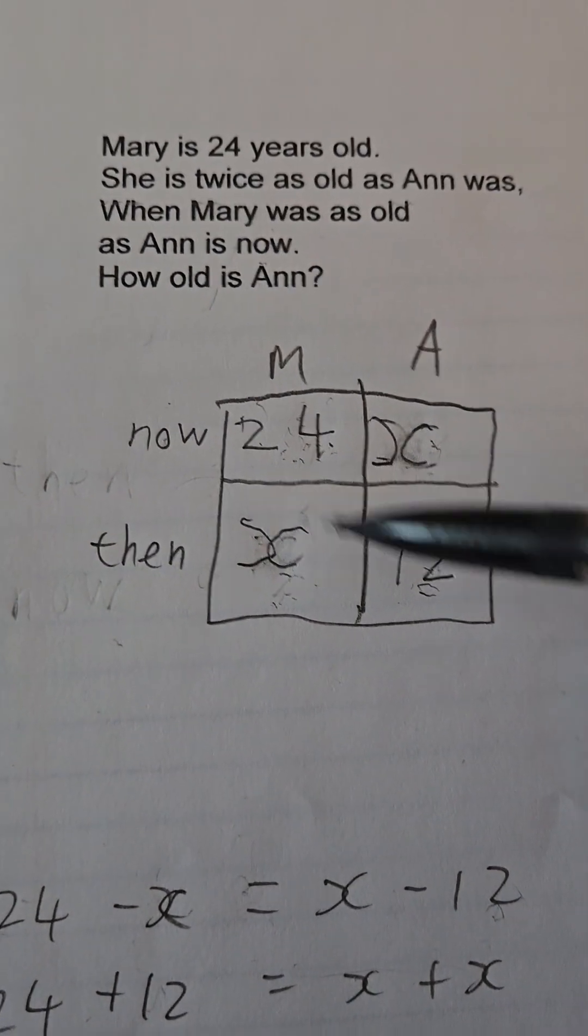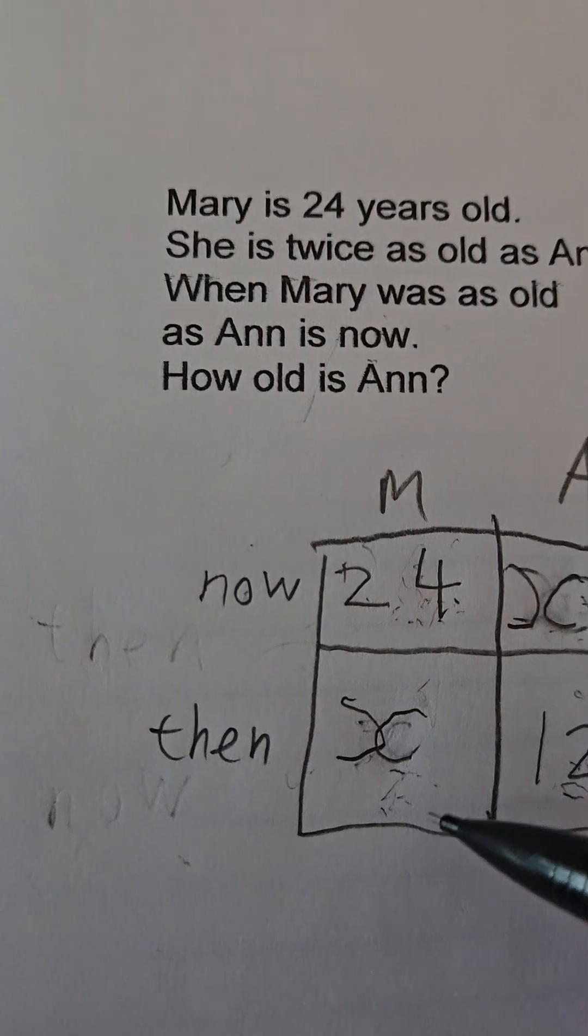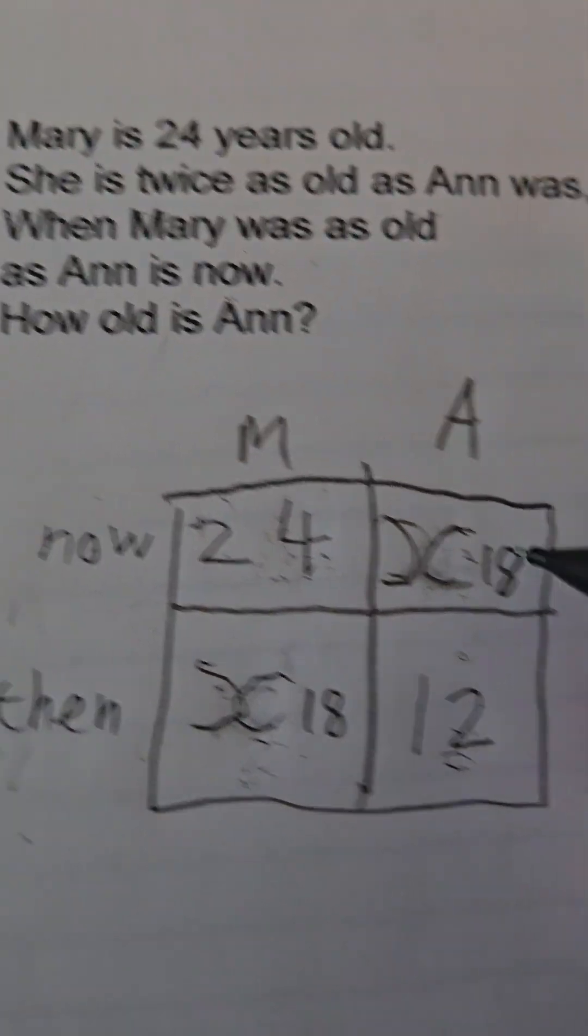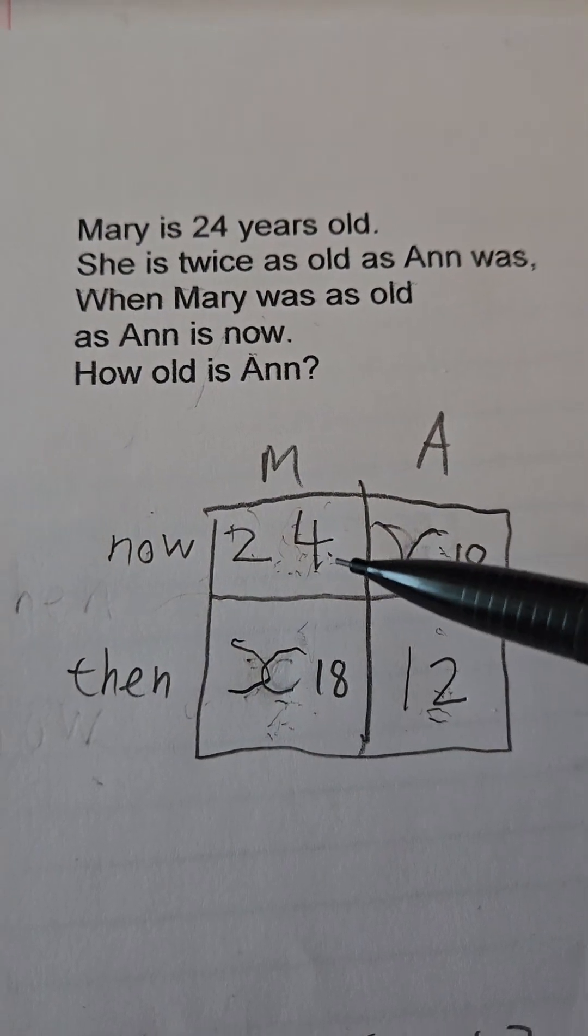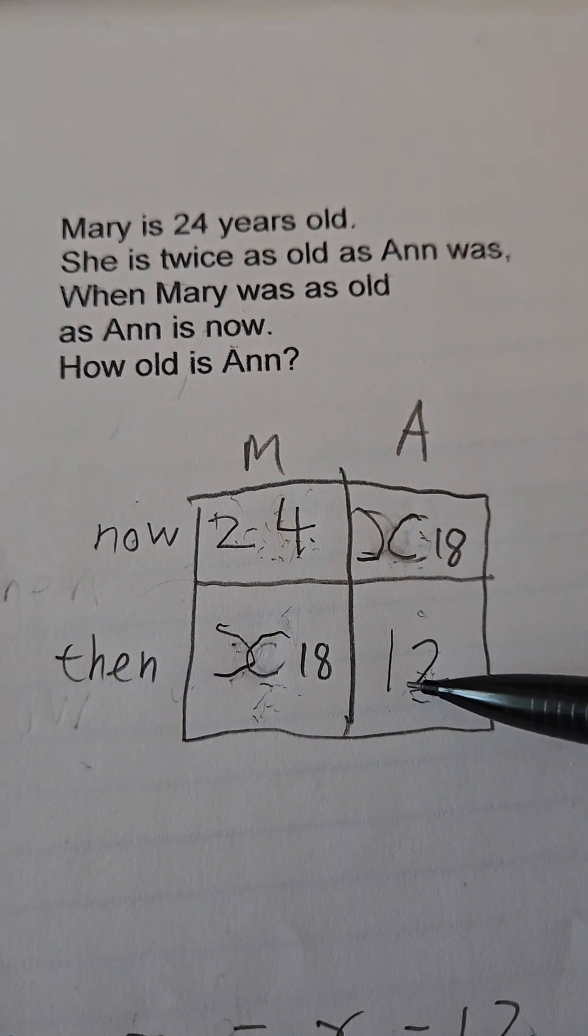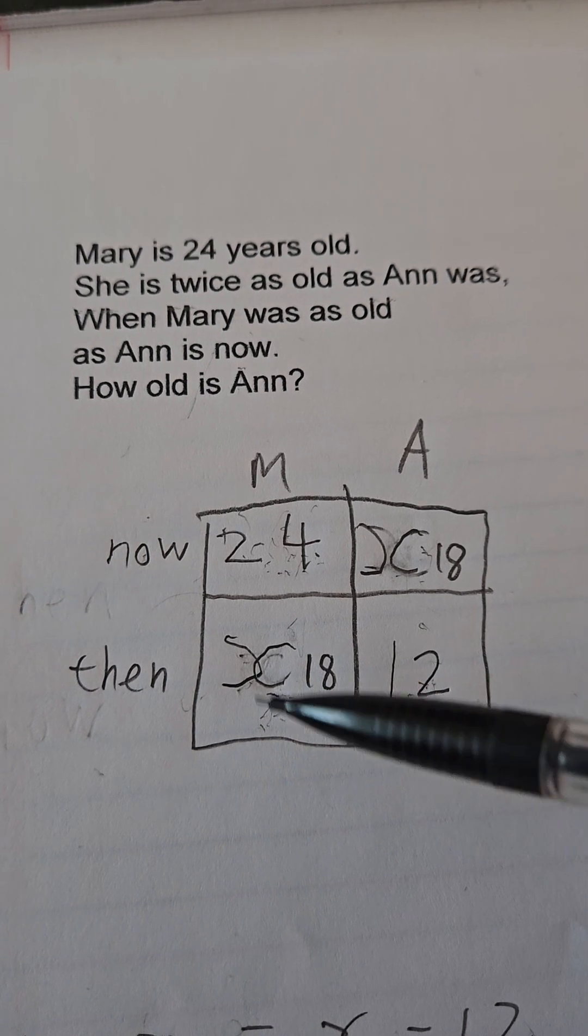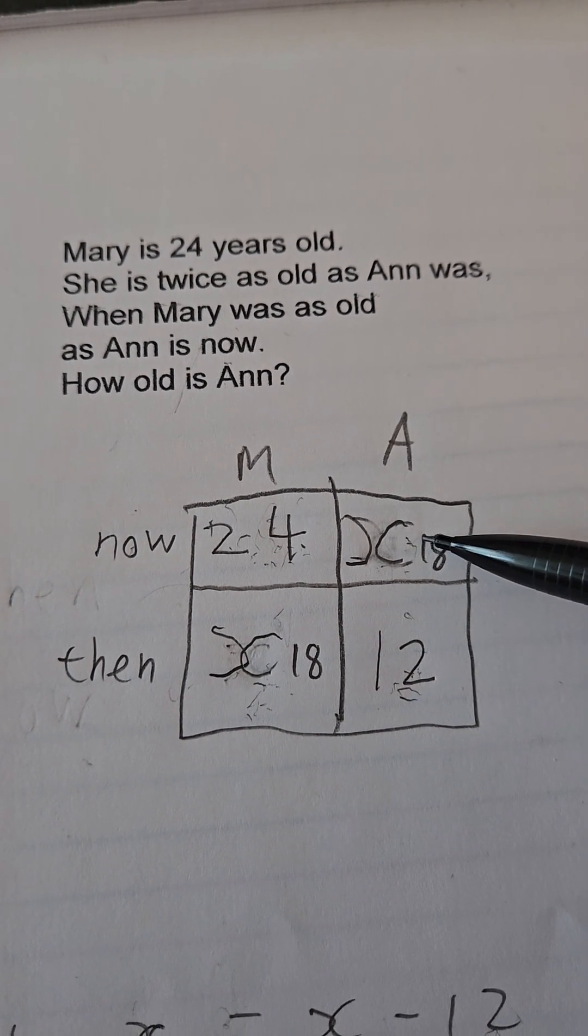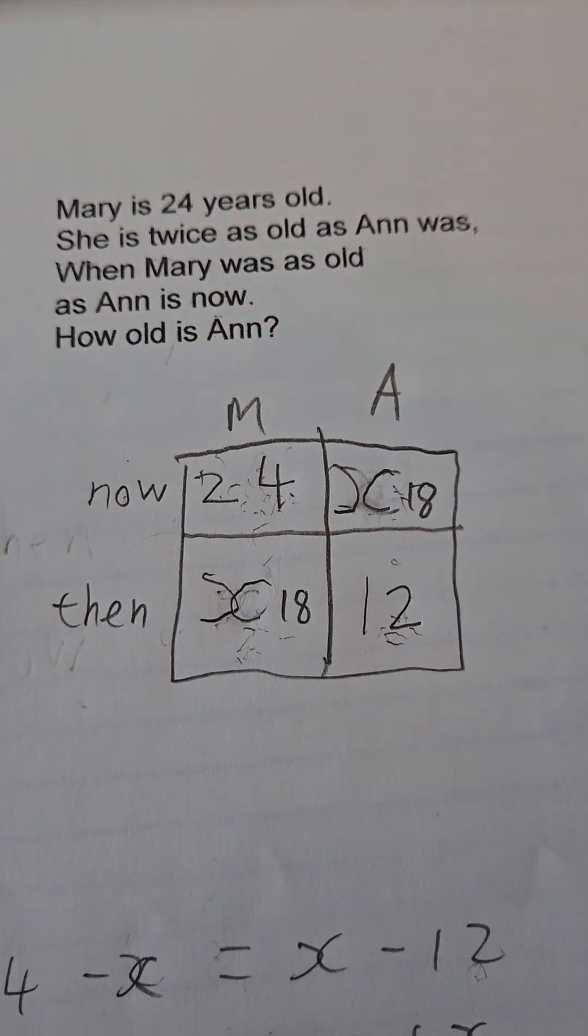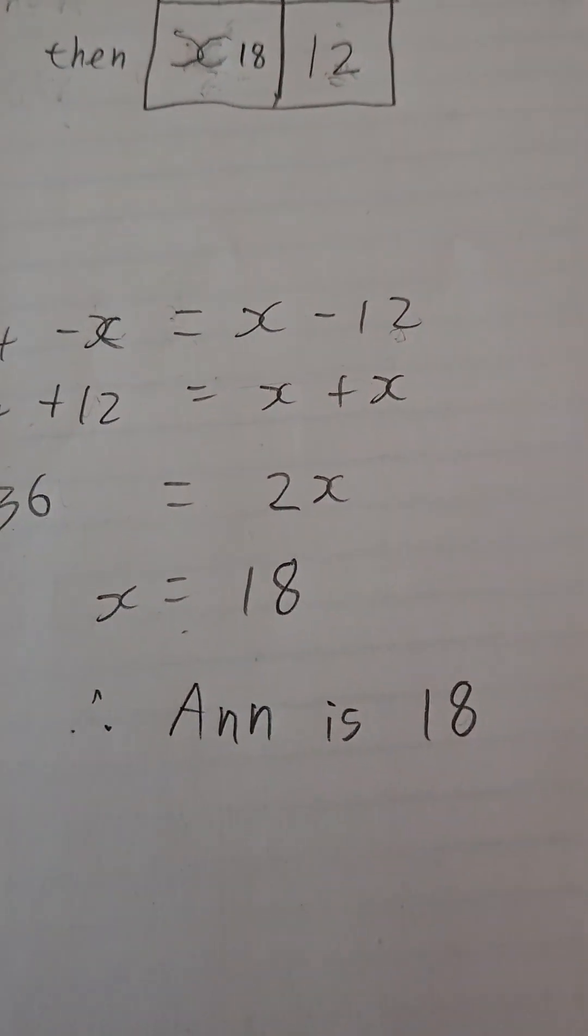So let's check it. With the same diagram I'm just going to write in an 18 there. I've replaced the x with 18. See if it makes sense. Mary is 24 years old. She's twice as old as Anne was when Mary was as old as Anne is now. And they've both aged the same six years, so it must be correct. Therefore Anne is 18. I'll see you next time.